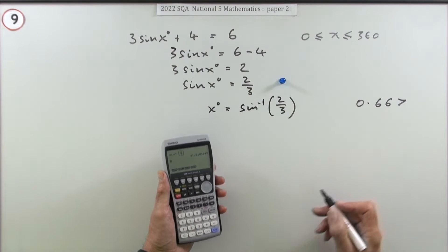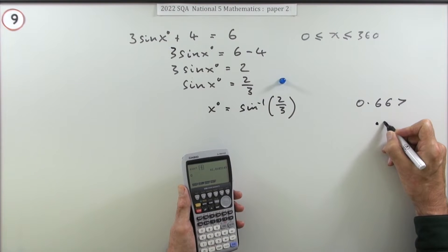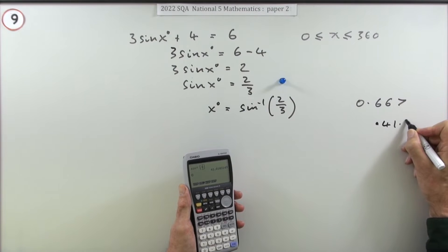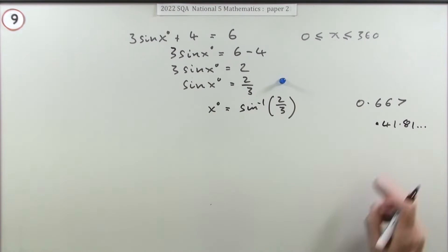So you type that in and you get an answer of 41.81 and so on. Now that's the acute angle that may or may not be one of the two answers you're going to have here.